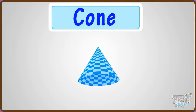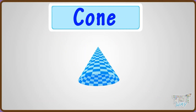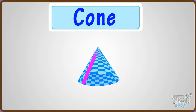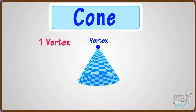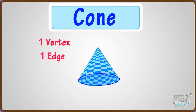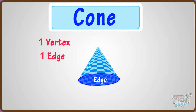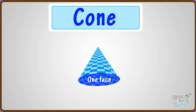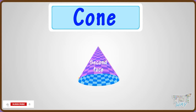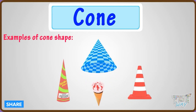Now let's learn another shape — Cone. A cone is a 3D shape that tapers smoothly from a circular base to a point called its vertex. It has one vertex which is the tip of the cone, and one edge which is round in shape. It has two faces: one is a round face on its bottom, and the other is the curved surface of the cone that wraps around it. These are a few things that have a cone shape.